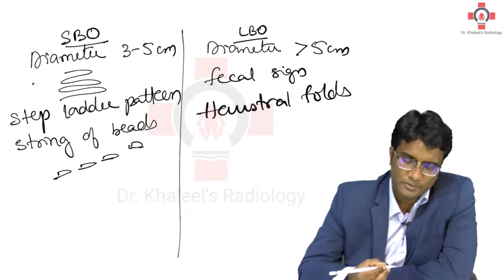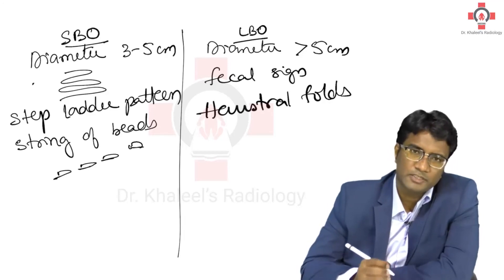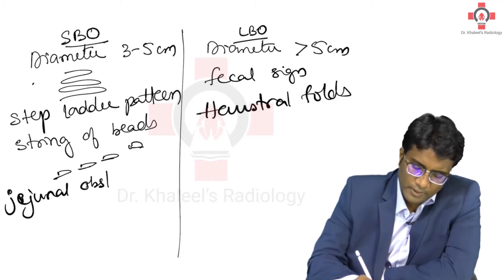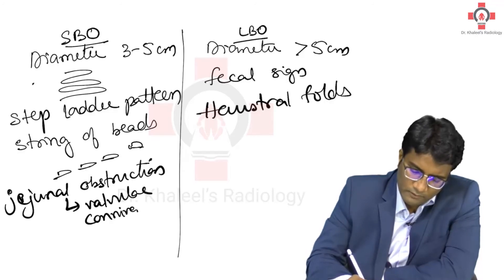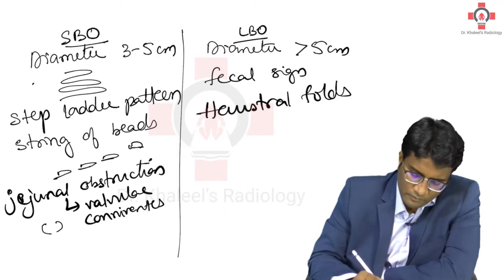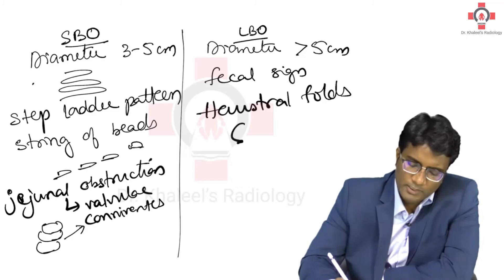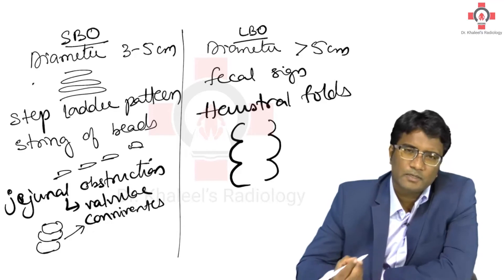Small bowel loops would not have haustra folds. The important finding in small bowel obstruction, especially in jejunal obstruction, is the presence of valvulae conniventes — circular mucosal folds which run through and through the bowel wall. Haustra, by contrast, are only at the periphery of the bowel.